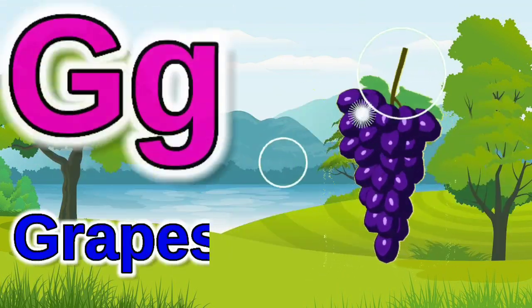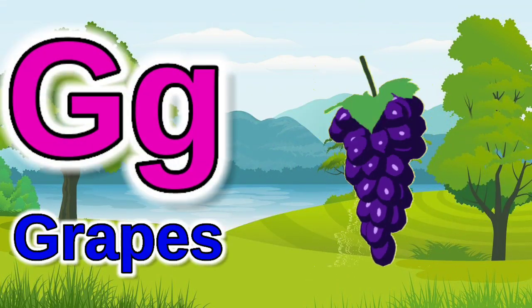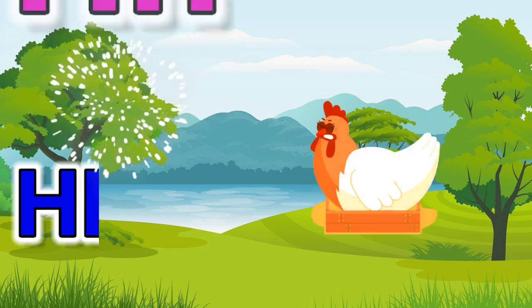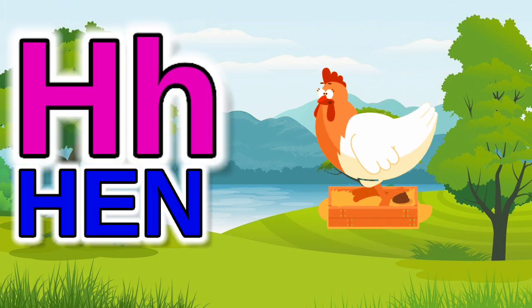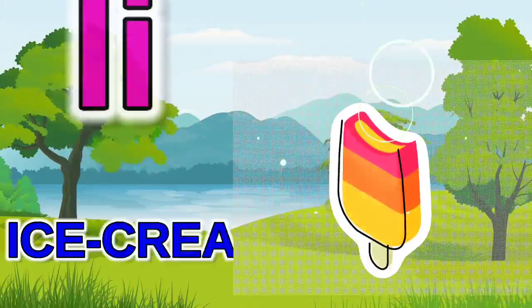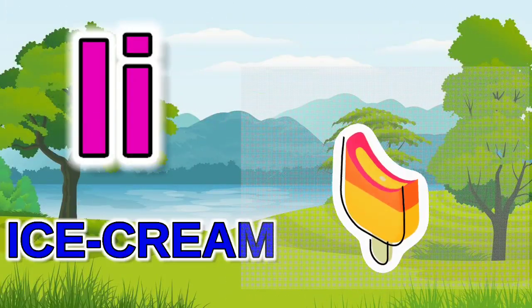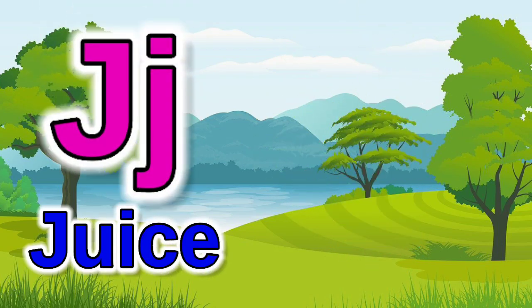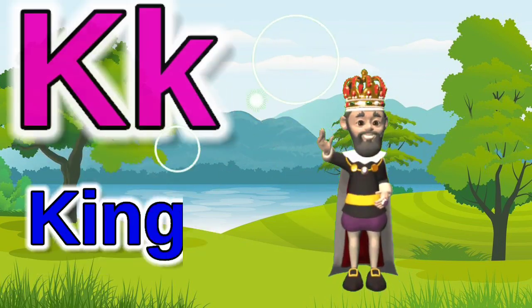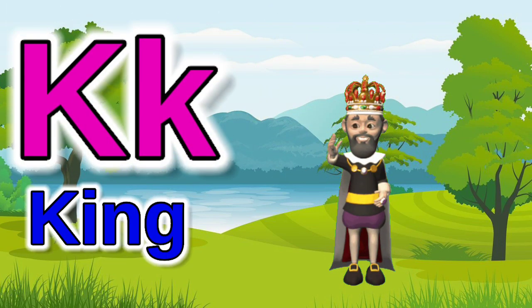G for grapes, H for hen, I for ice cream, J for juice, K for king.